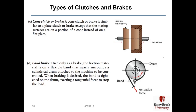A cone clutch or brake is similar to a plate clutch except that the mating surfaces are on a portion of a cone instead of a flat plate. In a band brake, the friction material is on a flexible band that nearly surrounds a cylindrical drum attached to the machine to be controlled. When braking is desired, the band is tightened on the drum, exerting a tangential force to stop the load. The actuation force pulls down on the edge of the band, which forces the band against the side of the drum, creating the friction force that slows the drum.